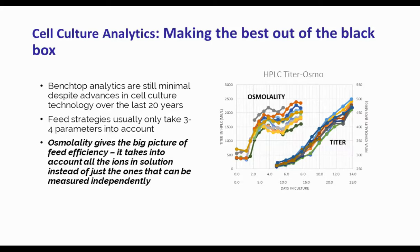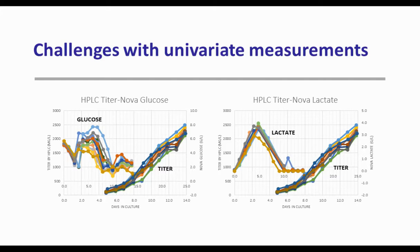Looking at a couple more graphs — the challenge with glucose and lactate parameters is that they're univariate. They only tell us the glucose or lactate in solution as a surrogate marker for the rest of cellular metabolism. We see a pretty large spread across glucose values and a smaller spread across lactate values, but this isn't necessarily guiding us to the same conclusions that osmolality did. I probably would have discounted a feed strategy that resulted in early glucose accumulation, which is what we're seeing with the light blue line on the glucose graph.